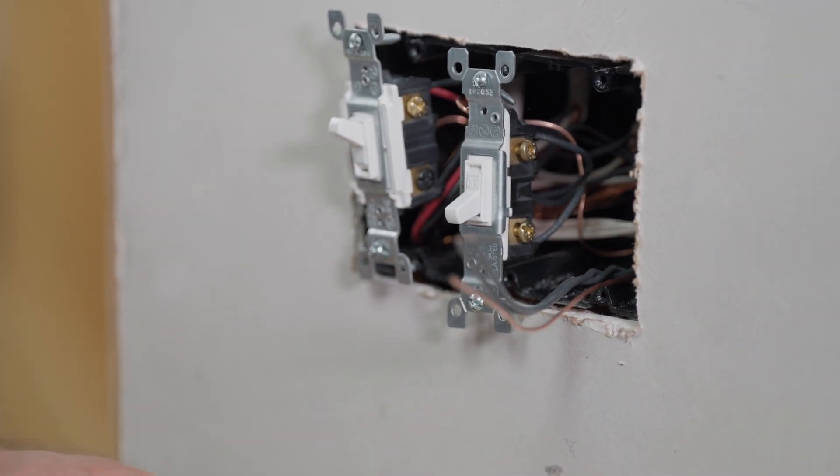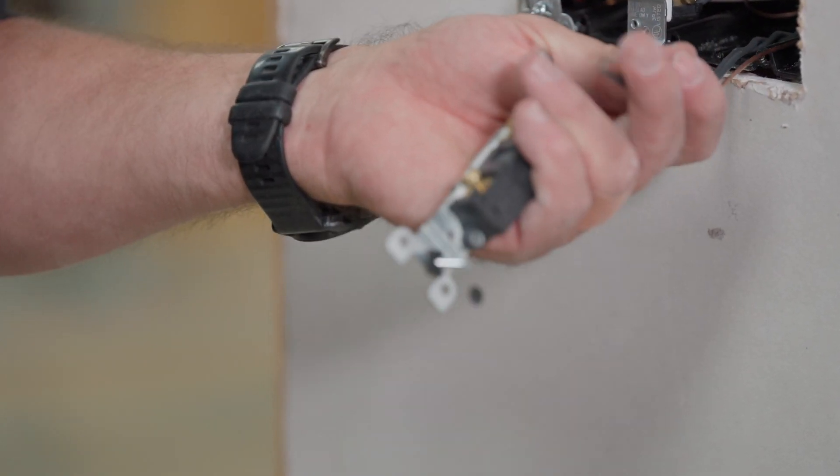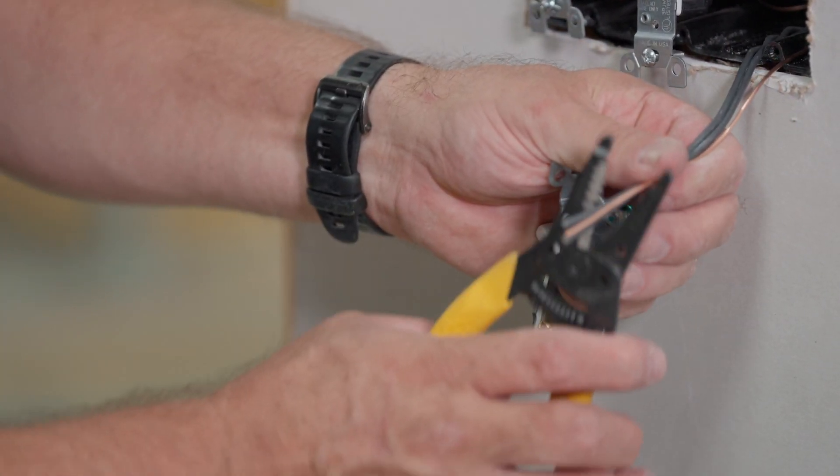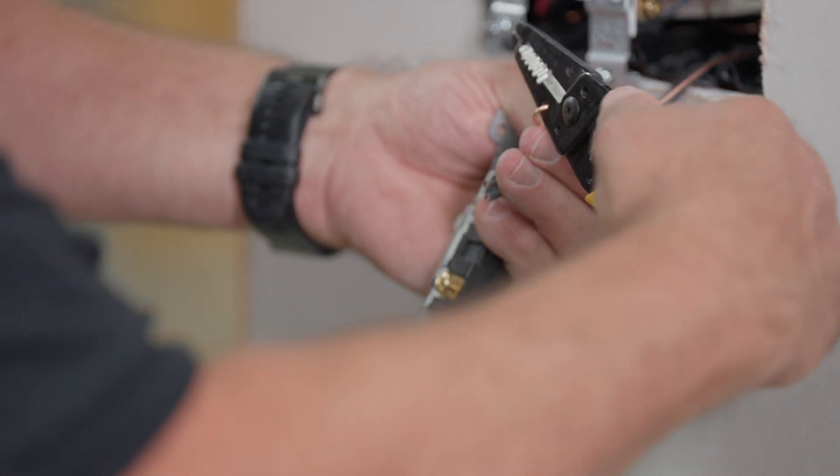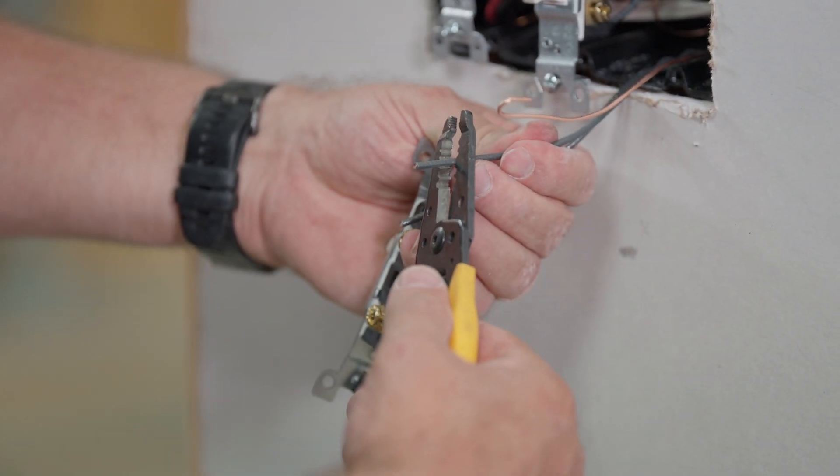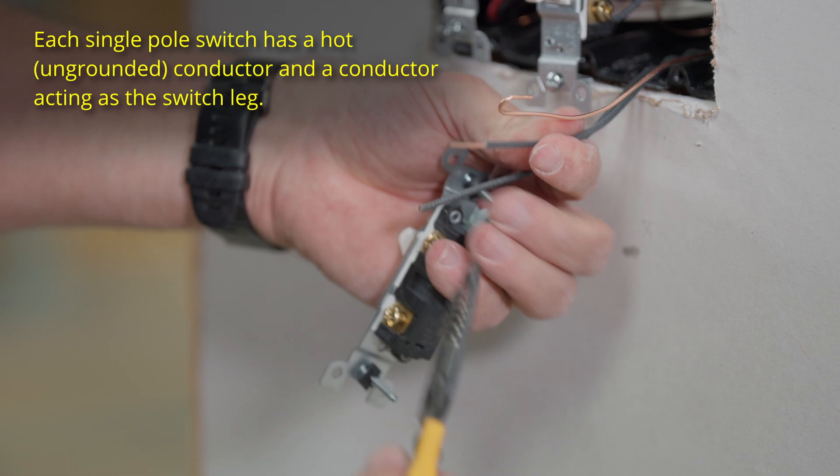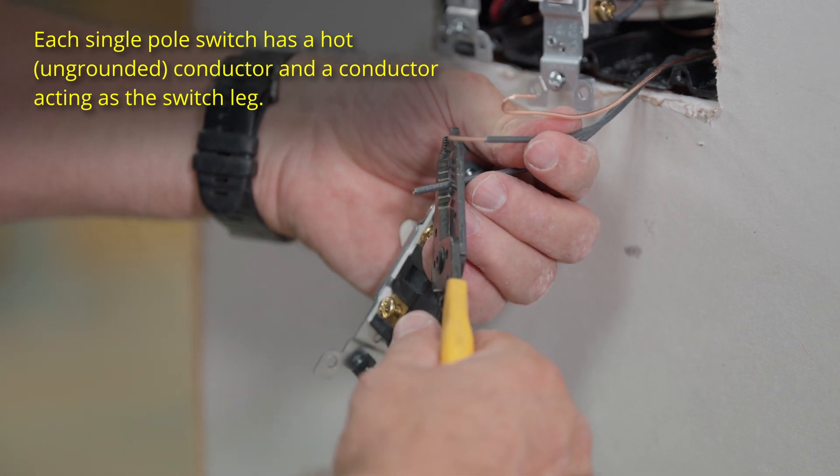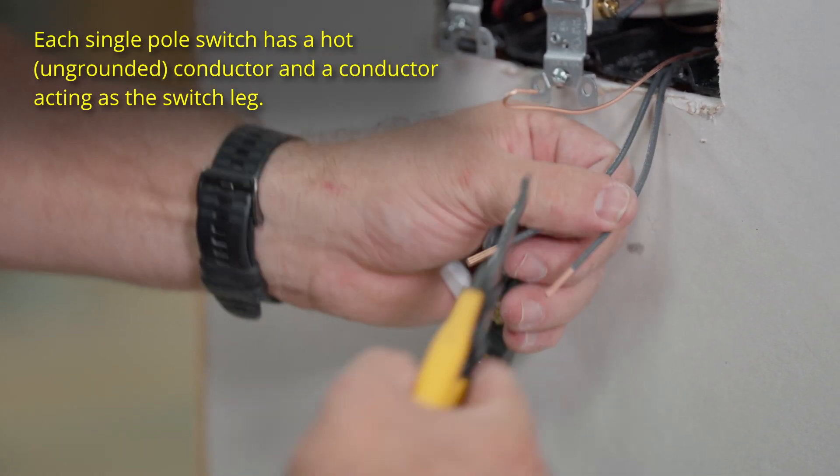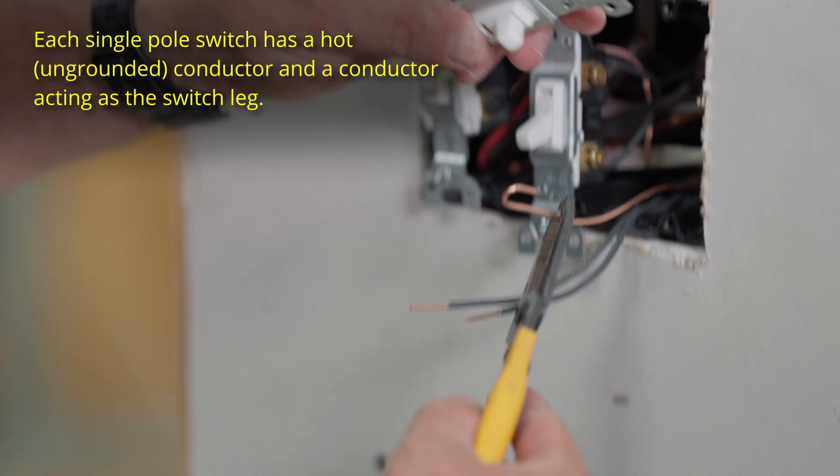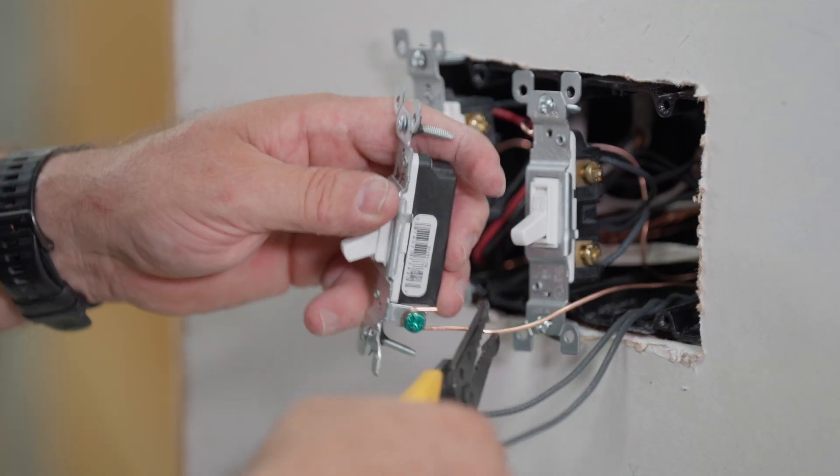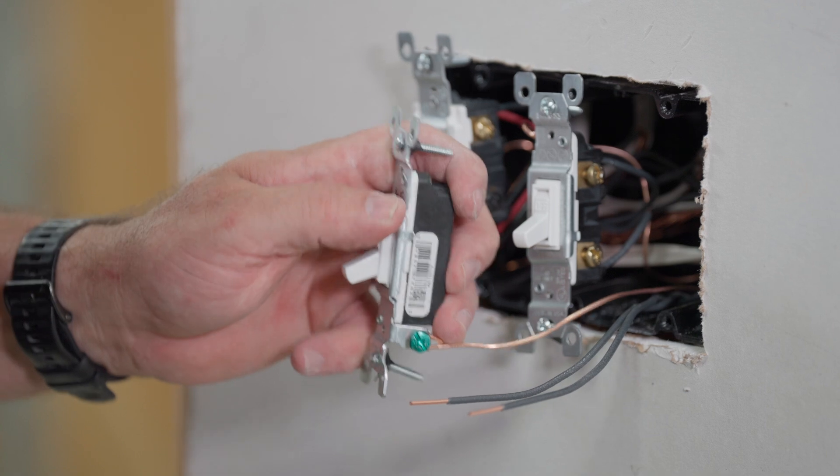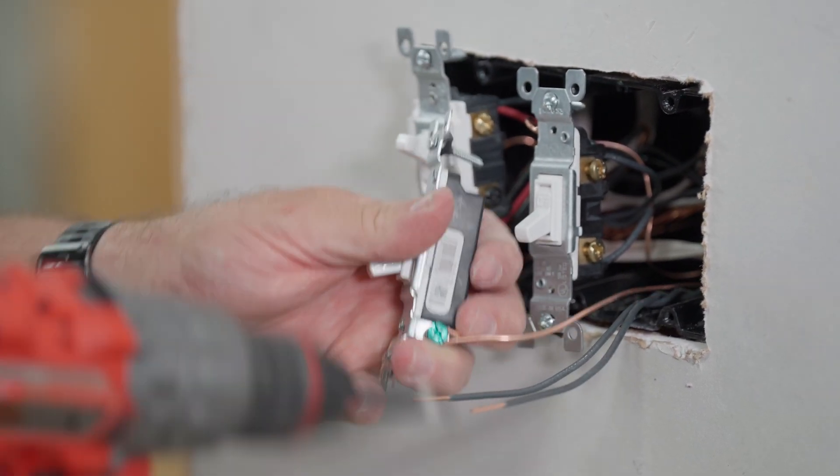Now we have the third switch. It's a single-pole switch. We're going to cut these and make the loop for the ground and strip the two hot conductors to the right length, right like this. The ground terminal is easy to find. We're going to put this ground terminal on here and tighten it. Use our drill and carefully tighten it up.